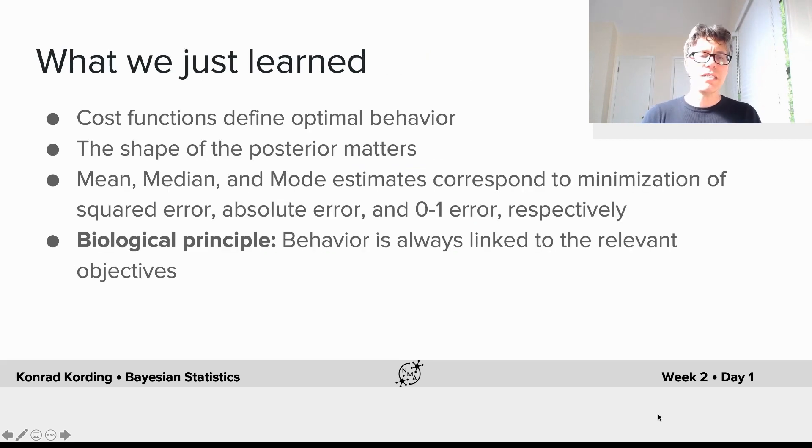Now what have we just learned? Cost functions define optimal behavior. For normative models we need cost functions. The shape of the posterior matters because mean, median, and mode give different optimal estimates and they correspond to the minimization of squared error, absolute error, and zero-one error respectively.